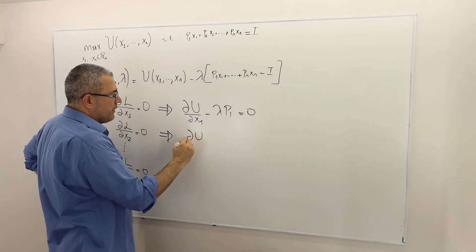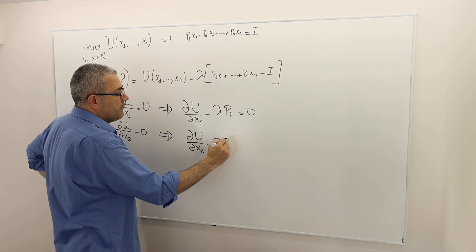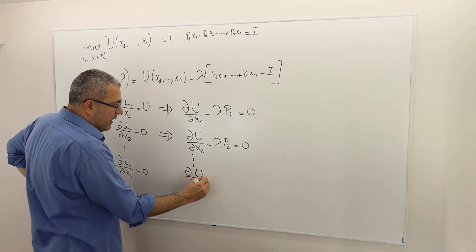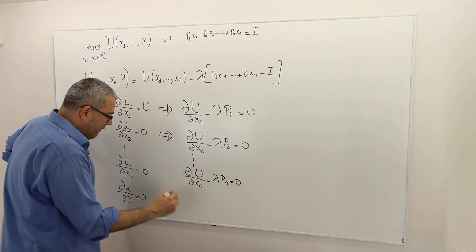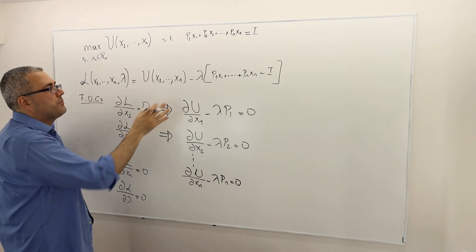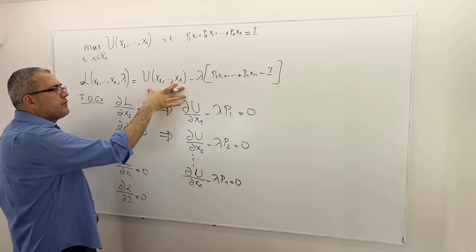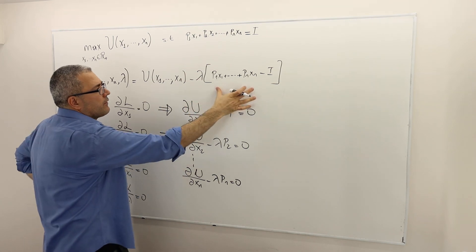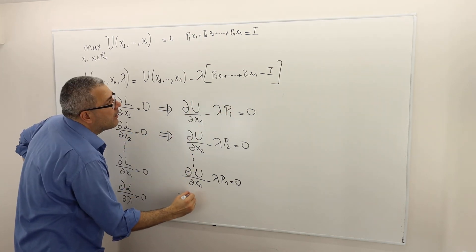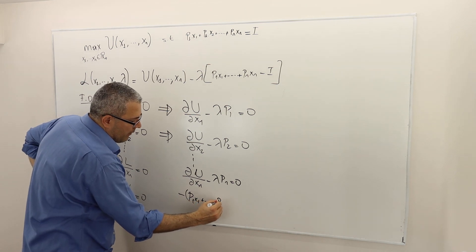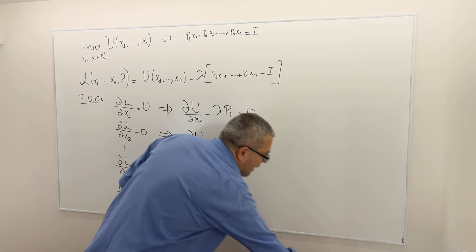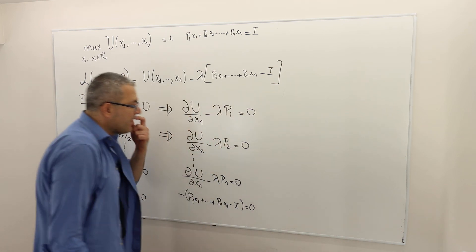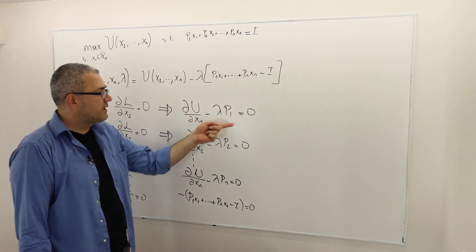Symmetrically, we have ∂U/∂x2 minus lambda·p2 equals 0, all the way up to ∂U/∂xn minus lambda·pn equals 0. And finally, when you take the partial derivative with respect to lambda, the derivative of the utility function with respect to lambda is 0 because there's no lambda parameter in the utility function. So therefore, it's only minus p1·x1 all the way up to pn·xn minus income equals 0. So the next step is just to simplify those equations.